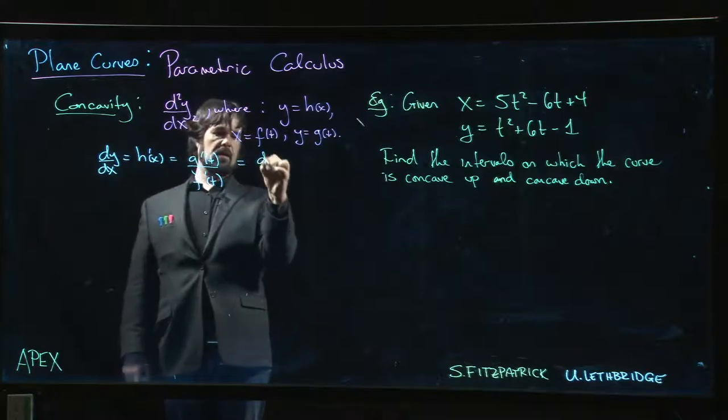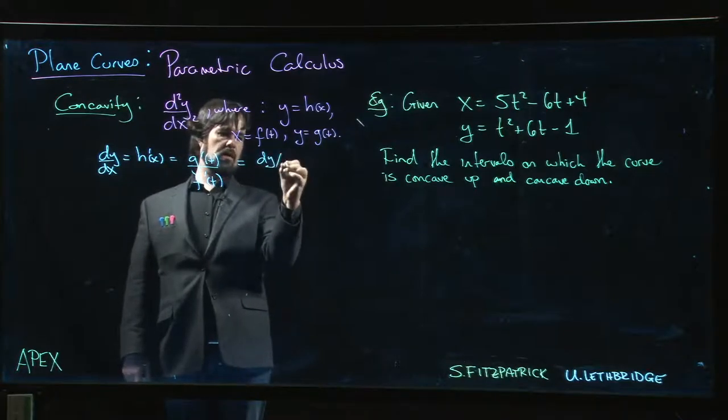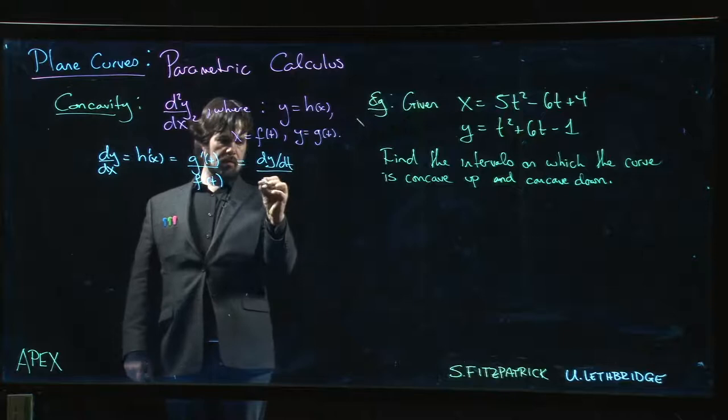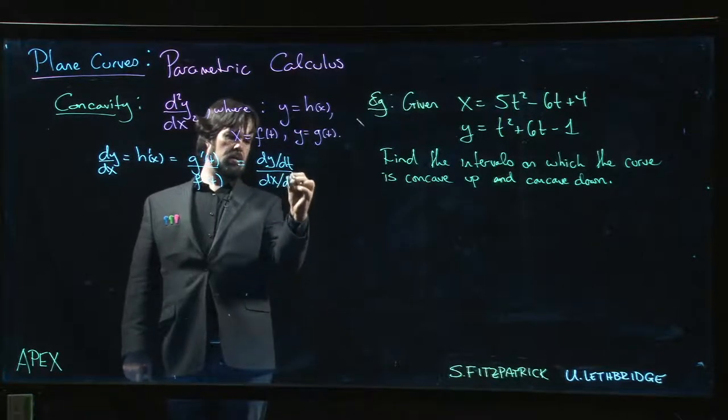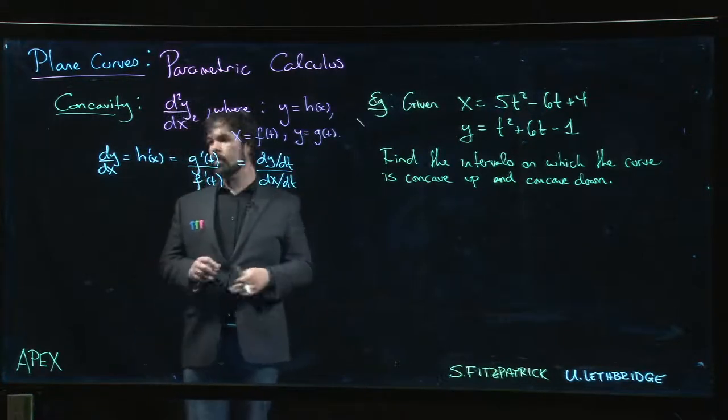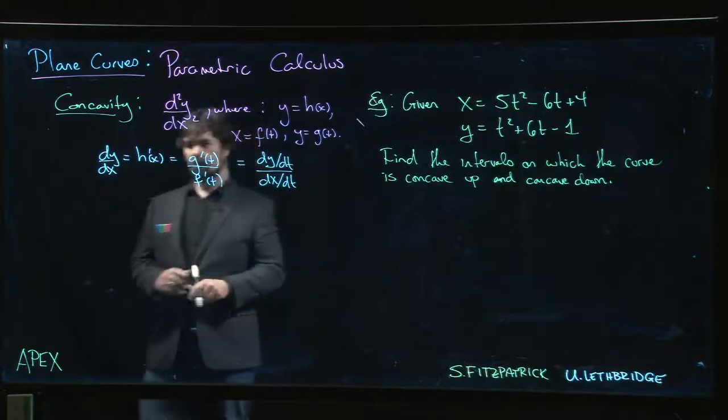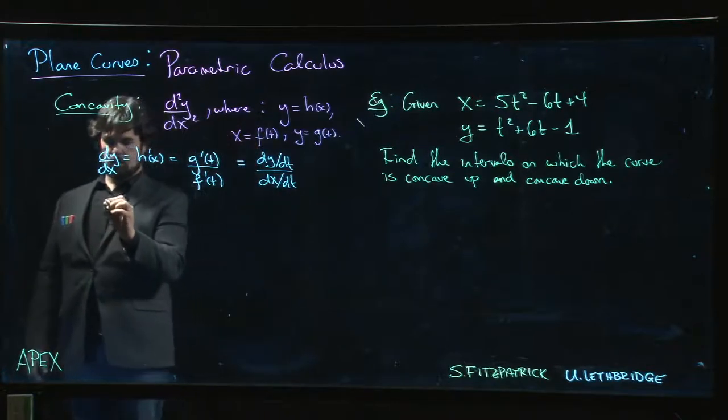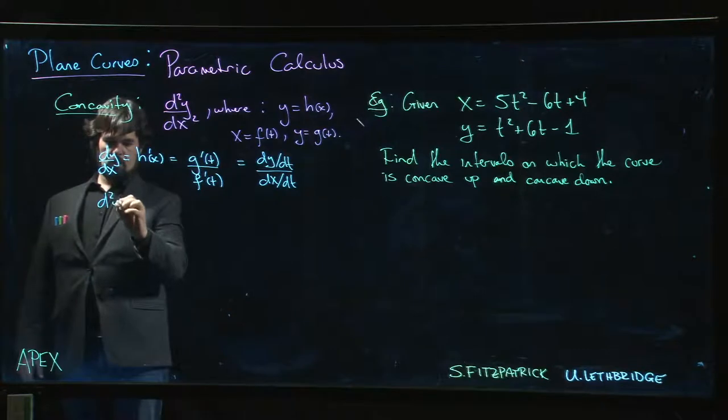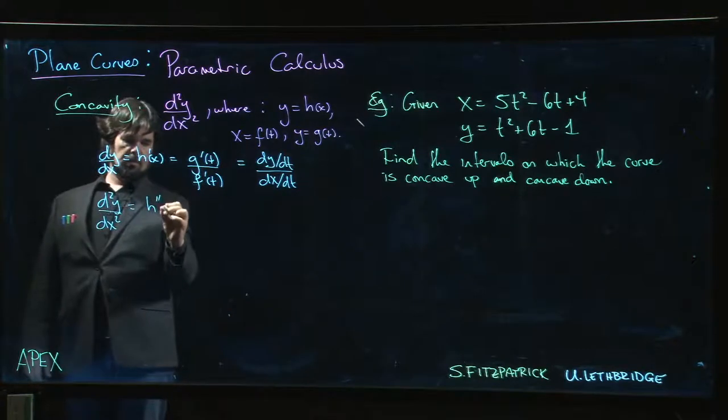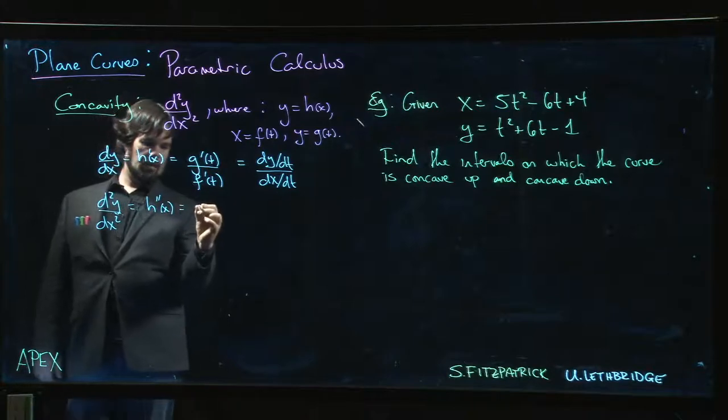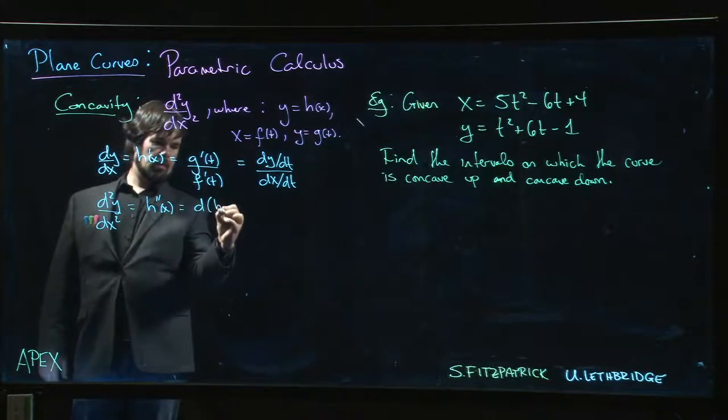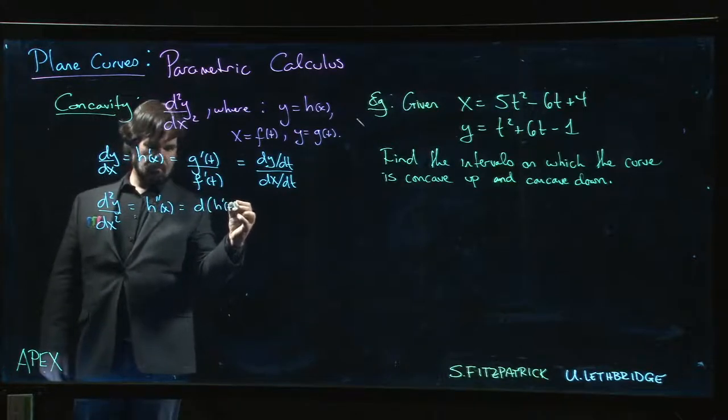It's dy/dt over dx/dt. Okay, so we can do that. So what is d squared y over dx squared?